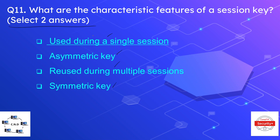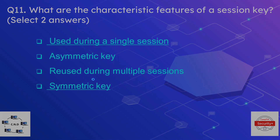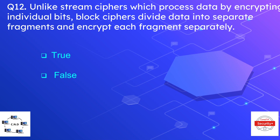The correct options for question eleven are: used during a single session, and it is a symmetric key. Symmetric key means the same key is used by the sender and receiver for both encryption and decryption. Question number twelve: unlike stream ciphers which process data by encrypting individual bits, block ciphers divide data into separate fragments and encrypt each fragment separately. The correct option is true.